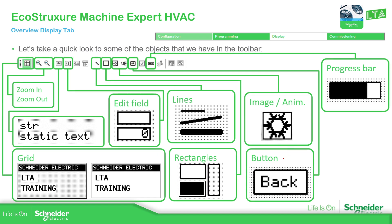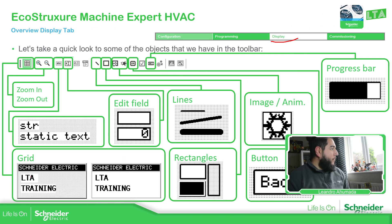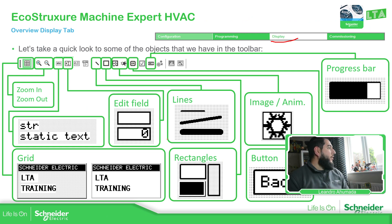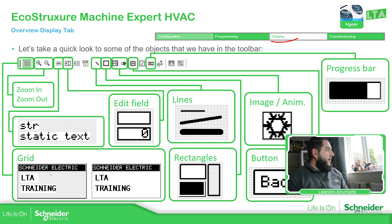Looking at the toolbar in the display part, the first element is related to the grid — you can select whether to show the grid or not. This is only for the development part, and I recommend enabling the grid so you can position elements much more accurately. We also have the possibility to zoom in and zoom out for a better view during design, though this doesn't mean the real display will have zoom functionality — it's just for development.